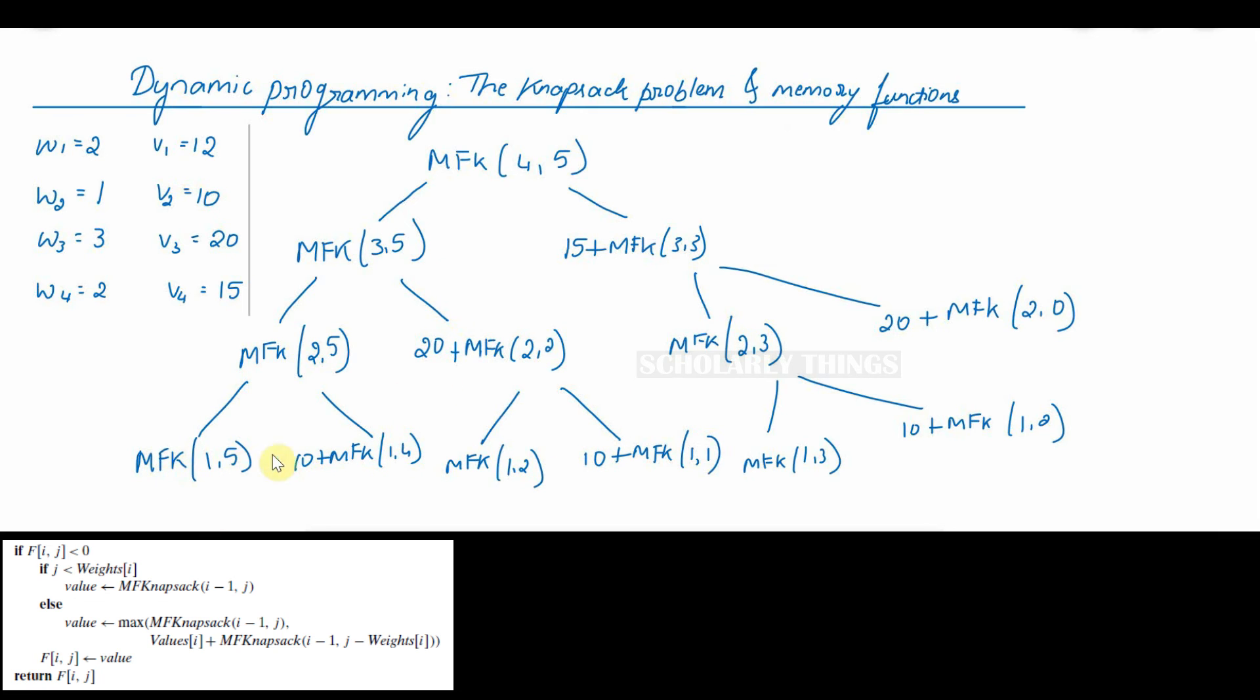The algorithm calls itself recursively as shown here. We need to find out all these values: mfk of 1 comma 5, mfk of 1 comma 4 plus 10, all these. And then go on finding the maximum among the two values till we reach the final point. I'll show for one value.